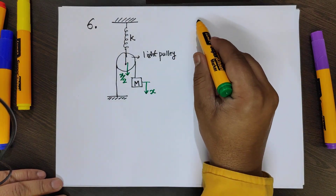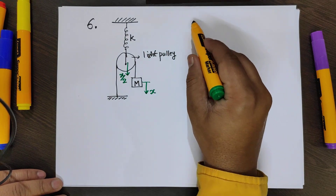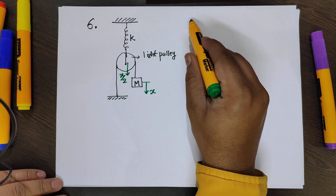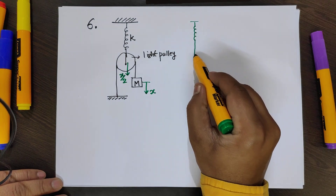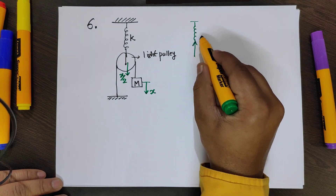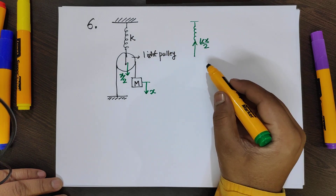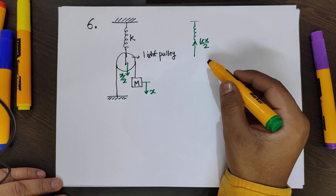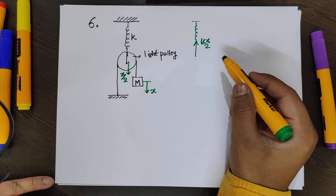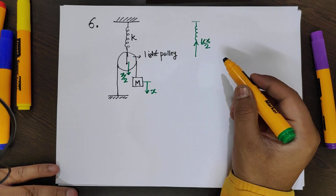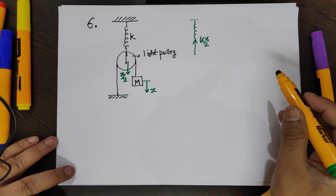What is the force in the spring? The extension in the spring is x/2, so the spring force is kx/2. Here we neglect gravity to find out the time period, as the time period won't depend on g.